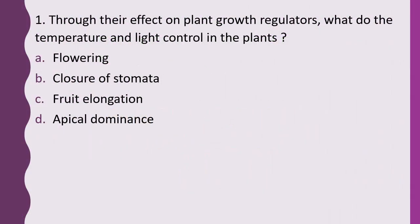Question 1. Through their effect on plant growth regulators, what do the temperature and light control in the plant? Options: Flowering, closure of stomata, fruit elongation, apical dominance. Correct answer is option A — flowering of the plant is controlled by temperature and light.